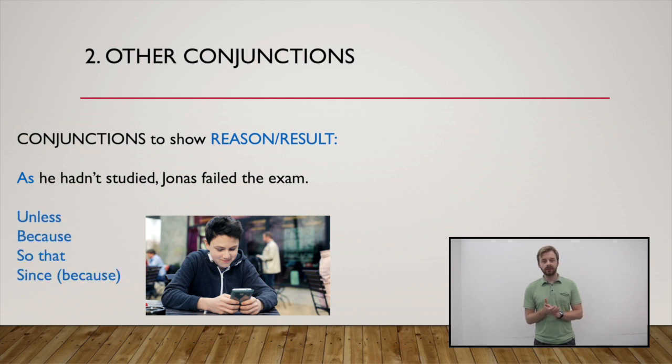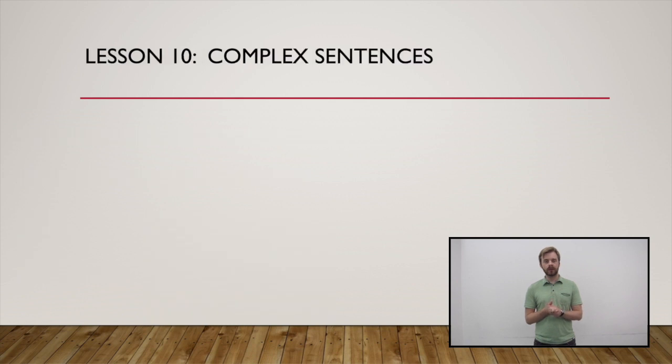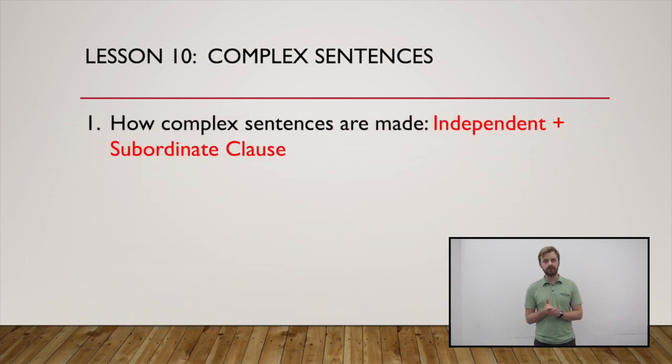So, to review. To make complex sentences you need two parts. The part with the complete idea, or what we call the independent clause. And the part with an incomplete idea that connects the independent clause, the subordinate clause.